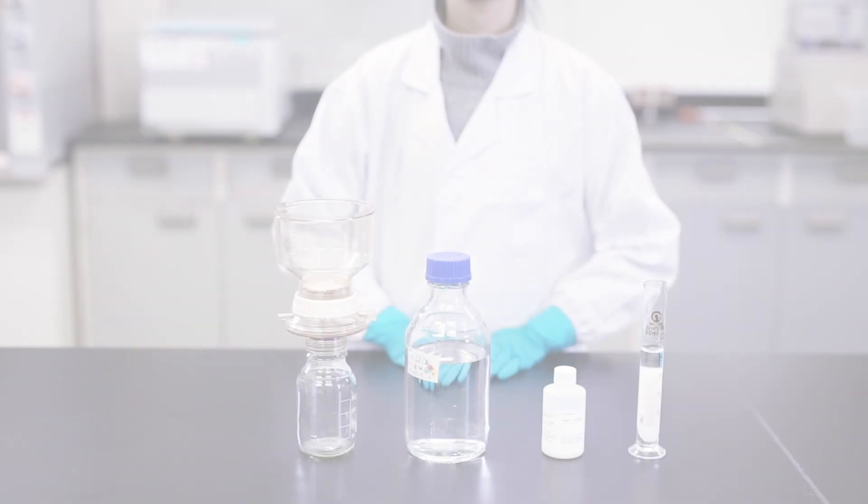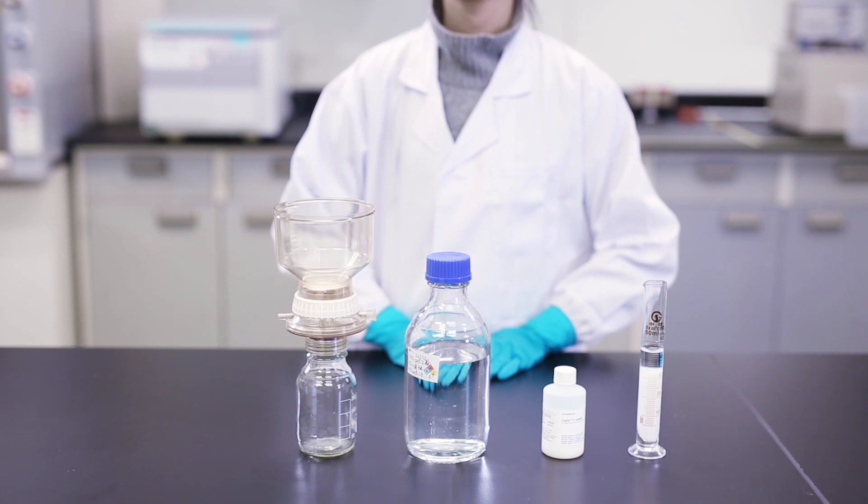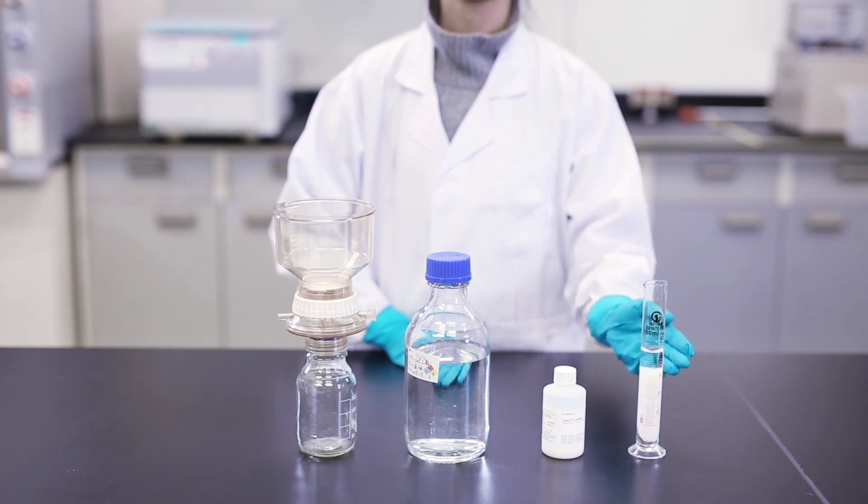Estimate the amount of slurry needed based on the final volume of the column. Most of our resins are delivered in a slurry concentration of 75% in storage solution, in most cases, 20% ethanol.